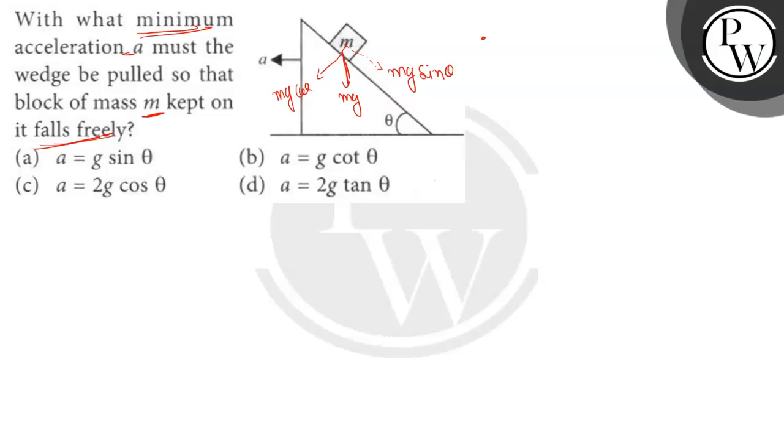Now, if the block is moving in this direction, there is a pseudo force ma. The pseudo force has two components. There is a normal component N by the wedge, and ma has components.